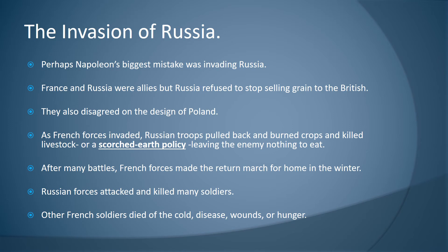The invasion of Russia: perhaps Napoleon's biggest mistake was invading Russia. France and Russia were allies, but Russia began selling grain to the British again and pulled out of the continental system in 1810, which resulted in Napoleon's invasion in 1812. They also disagreed on the design of Poland. As French forces invaded, Russian troops pulled back and burned crops and killed livestock — this is known as the scorched earth policy — leaving the enemy nothing to eat.